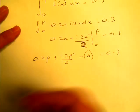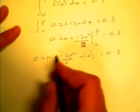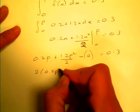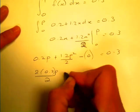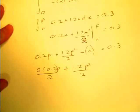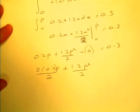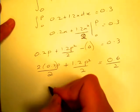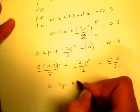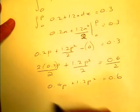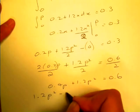Okay, let's tidy this up. I'll get rid of the 2 here, it becomes 2 times 0.2p plus 1.2p squared over 2 equals 0.3. So now I have 0.4p plus 1.2p squared equals 0.6. That's what I want to solve. I'll rearrange it.